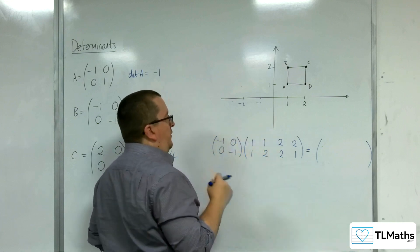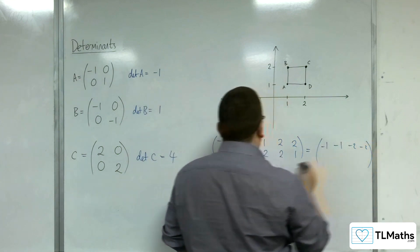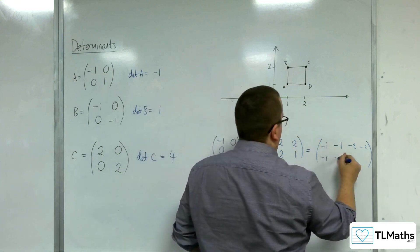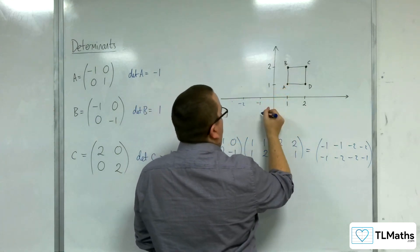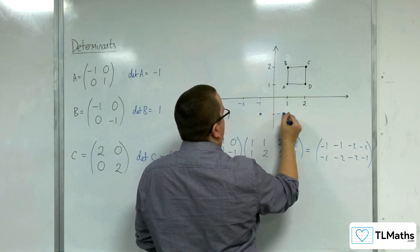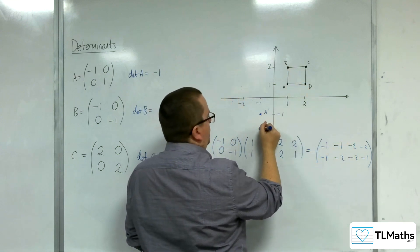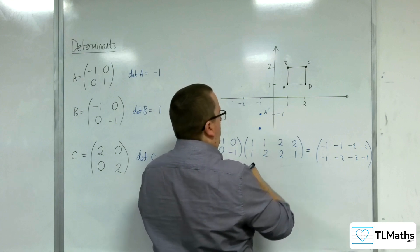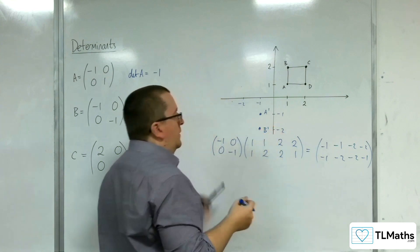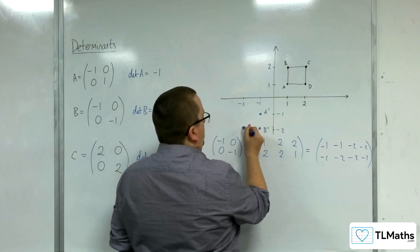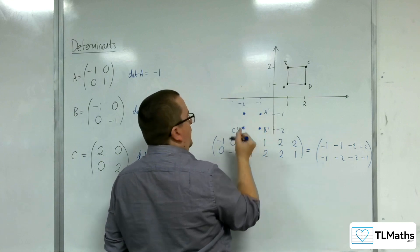So if we apply that matrix to our square, (-1, 0) times each of those, we'll get -1, -1, -2, -2, and (0, -1) multiply by each of those gives -1, -2, -2, -1. So point A is now at (-1, -1), somewhere here, that's A prime. B is at (-1, -2), so let's extend my axis down a little bit. That's B prime. C is now at (-2, -2), so here, that's C prime. And (-2, -1) is where D now is, so that's D prime. So here is my square.